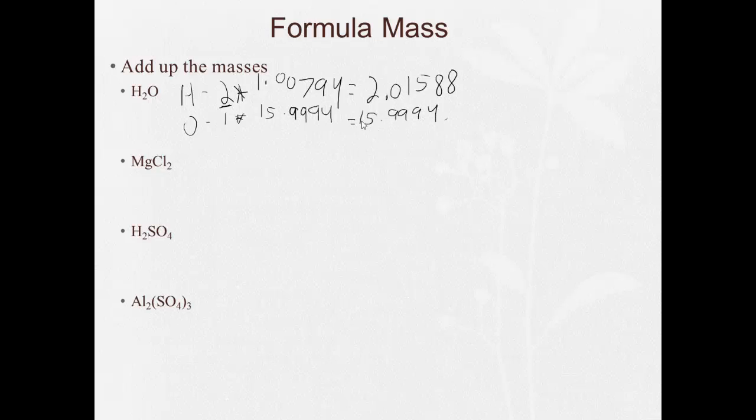I add them up. 15.9994, and that equals 18.01528. And here I have 1, 2, 3, 4, 5 after the decimal. Here I have 1, 2, 3, 4 after the decimal, so my answer I'm allowed 1, 2, 3, 4 after the decimal. So, get rid of the 8 and tell the 2 to become a 3, so it's 18.0153.